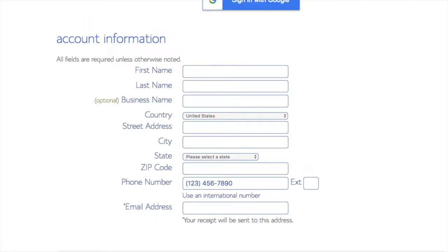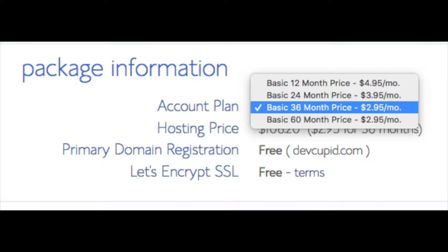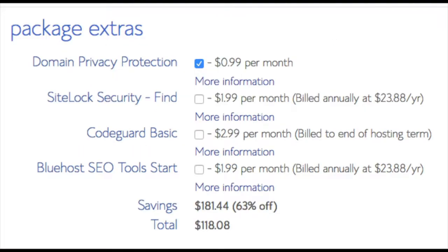You are now brought to a 'Create Your Account' page where you'll input your information: first name, last name, business name (optional), country, address, phone number, and the best email for you, as you'll get an email receipt of payment and a copy of your login credentials. Below that you will see package information, where you can select a term for your hosting: 12 months, 24 months, 36 months, or 60 months. You'll save more money the longer you purchase hosting. Setup fee is free, domain registration is free, and Let's Encrypt SSL is free — this makes your site secure with HTTPS. Domain privacy is an addon I highly recommend to prevent telemarketers from getting your personal contact information.